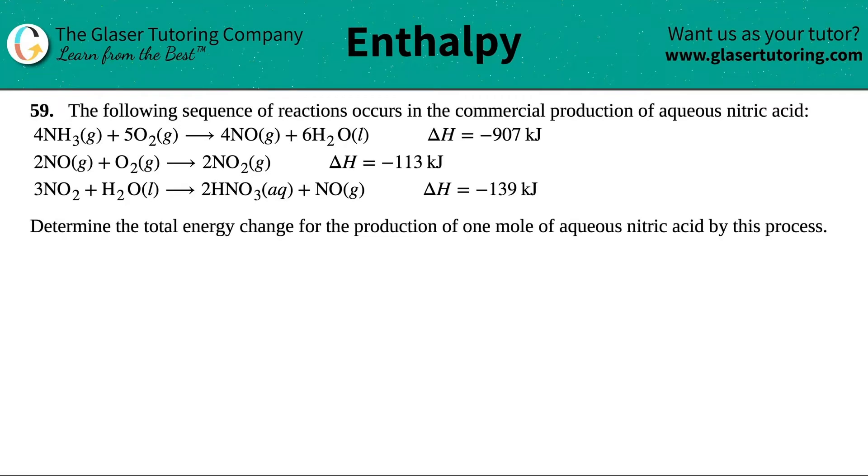Number 59. The following sequence of reactions occurs in the commercial production of aqueous nitric acid. We have three balanced equations with three individual steps and their corresponding delta H values, their enthalpy values. We want to determine the total energy change for the production of one mole of aqueous nitric acid by this process.